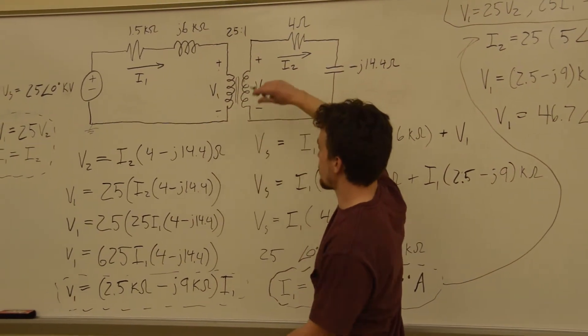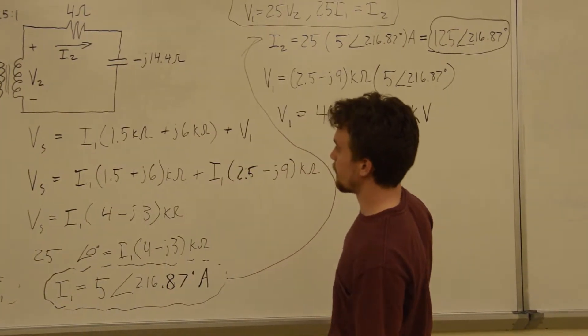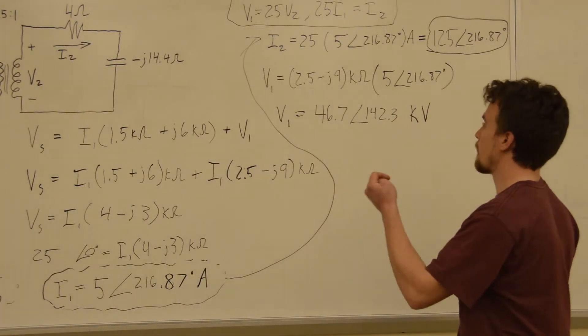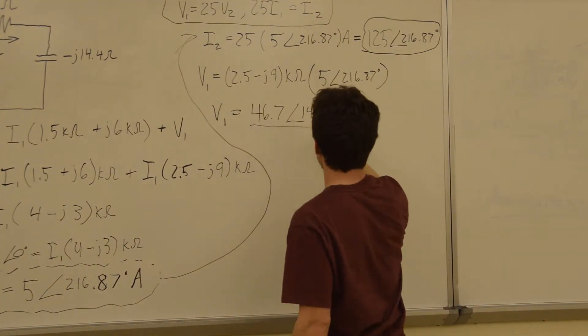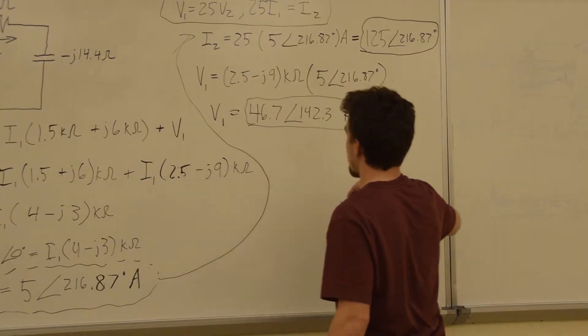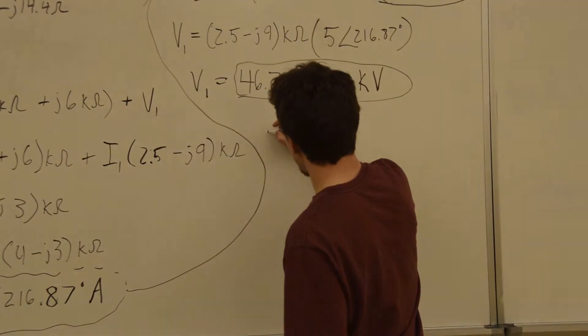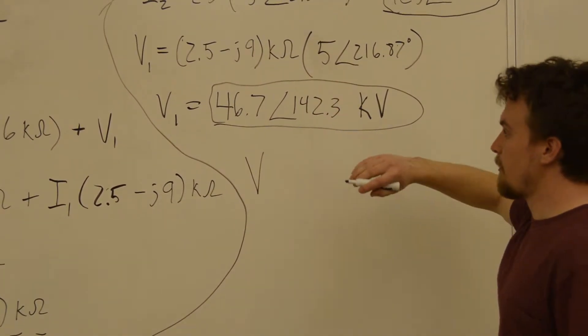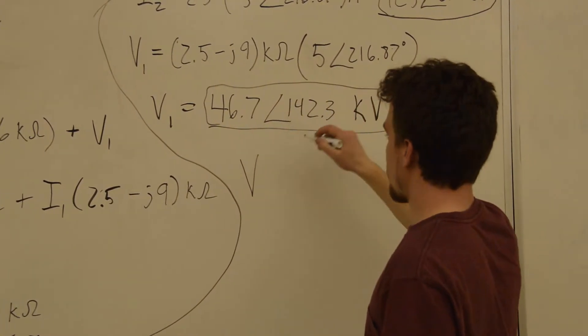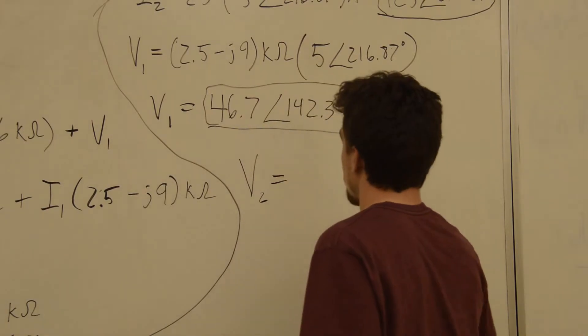That's the value on this side of the transformer. And, we know that this transforms the voltage down. So, V2 is going to be less than V1 by 25. A factor of 25. So, we have this value for V1. And, we're just going to divide it by 25 to get V2. And, what happens when you do that? Again, we're going to just take this number in polar form and put it in your calculator and divide the value by 25.